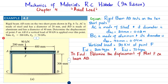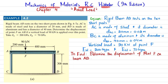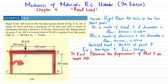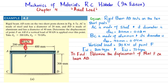In this video we are going to solve Example 4.2 taken from Chapter 4, Axial Load, from Mechanics of Materials by R.C. Hibbeler, 9th edition. The problem states: the rigid beam AB rests on two short posts. Post AC is made of steel with a diameter of 20 mm, and post BD is made of aluminum with a diameter of 40 mm. A vertical load of 90 kN is applied at point F.